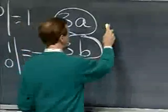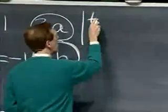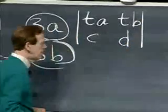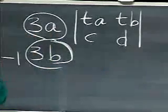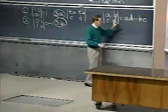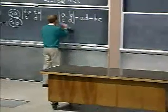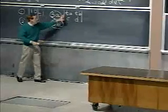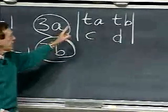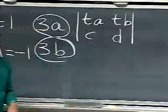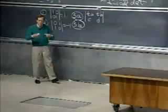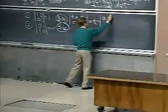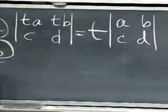Property three A says that if I multiply one row — say the first row — by a number T, and leave the other n minus one rows alone, then a factor T comes out: the determinant becomes T times the original determinant. That's not hard.